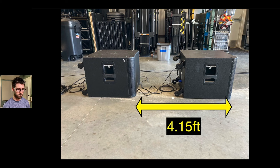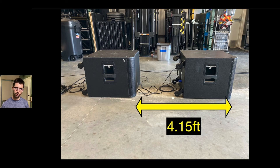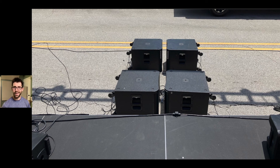Here are some specific examples of what these look like. First is the inline gradient sub array. We use delay added to the rear sub, a physical displacement of the rear sub, and a polarity inversion — that's the recipe. I've chosen 4.15 feet of physical placement. This is a four-element inline gradient where the acoustic centers of these subs are in the middle, aligning and going forward and out to create a cardioid pattern.